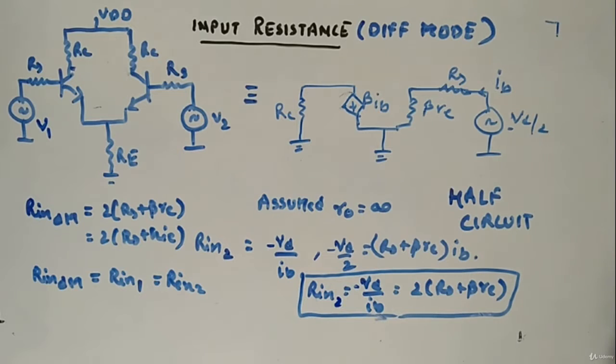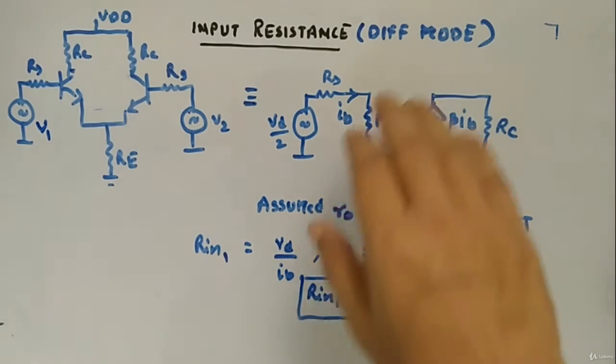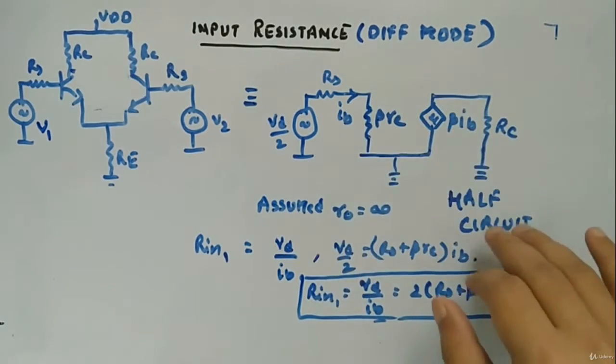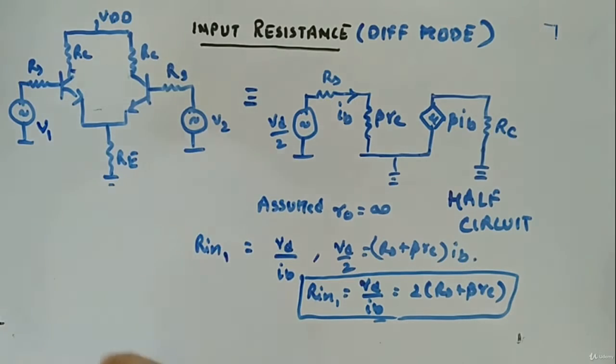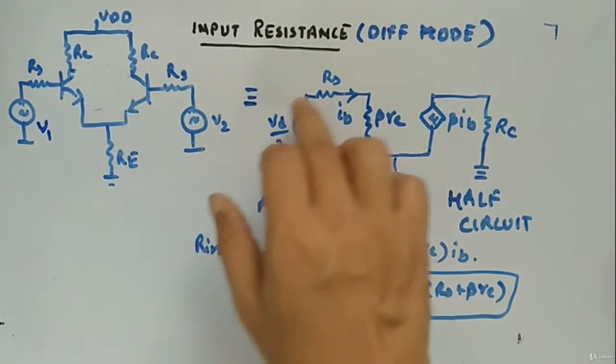Now let's look at the differential mode. So I made the half circuit benefit of this differential amplifier. So you can see Vdd by 2 I have applied, Rs,